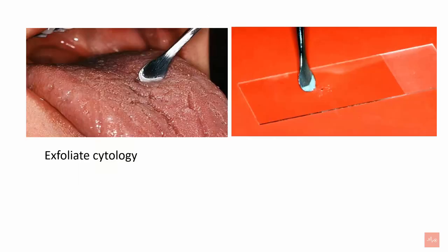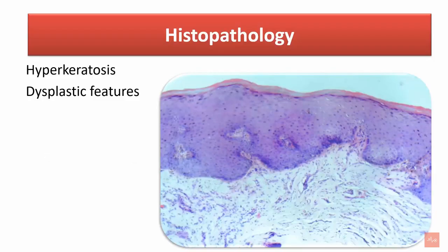Exfoliative cytology involves scraping of superficial cells from the lesion and examining them under a microscope for dysplastic features. Histopathology will show hyperkeratosis and variable degrees of dysplastic cells.